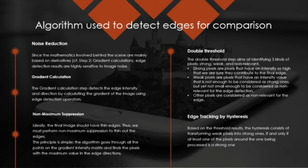The second algorithm is gradient calculation. With the help of gradient calculation we can detect intense edges by calculating the gradient of the image using edge detection operators. The next step is non-maximum suppression. Ideally we want the final image to have sharp edges, so we must perform a non-maximum suppression operation. The principle behind this algorithm is simple: we find the pixels with the maximum gradient values in each direction.